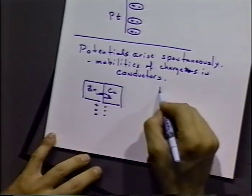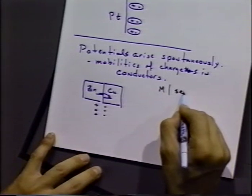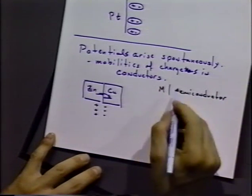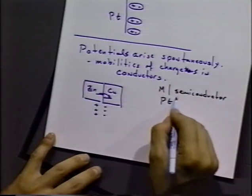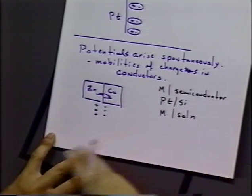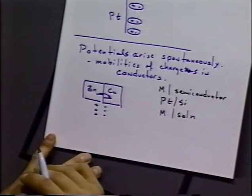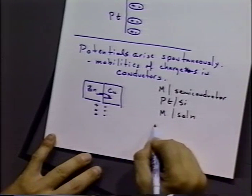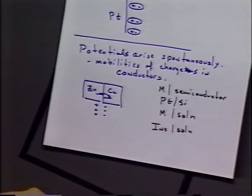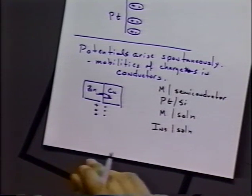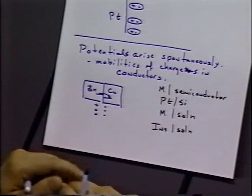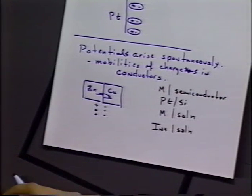Anytime we have a metal with an interface with a semiconductor, say platinum-silicon, or metal-solution, there will be potential differences associated with that. Even on insulators and solution there will be an interfacial potential built up. The insulators are fundamentally different because we don't have the mobility of charges, but there will still be a surface potential at that insulator-solution interface.